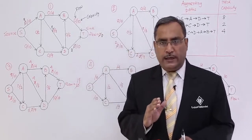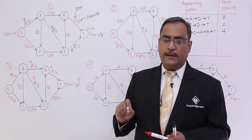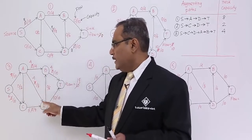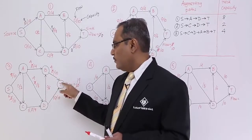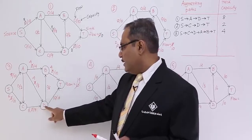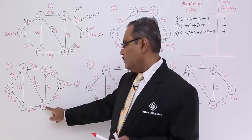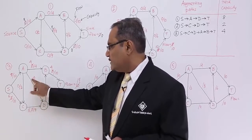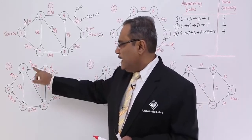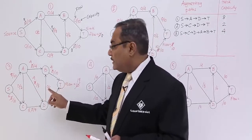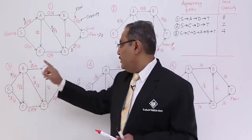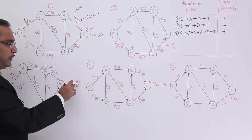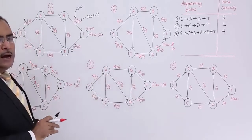See, in the earlier video we mentioned that each and every vertex other than source and sink should have the same inflow and outflow. The inflow to vertex A is 8, which gets distributed as 4 and 4. Node D has inflow 4 and outflow 4. Node C has inflow 6, which is also distributed. That particular node is having inflow 4 plus 6 plus 4 equals 10, and 10 is going to T. So each node other than S and T has the same inflow and outflow. This is the final graph after augmenting path number 3.